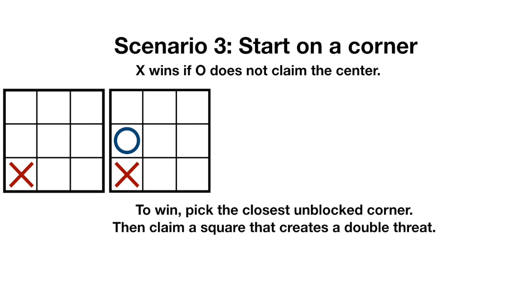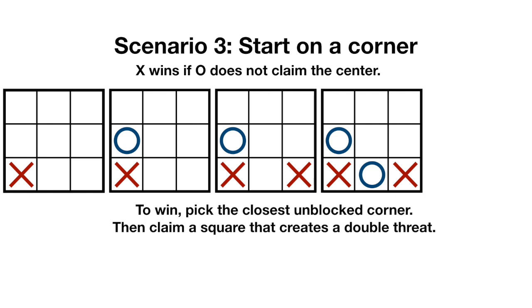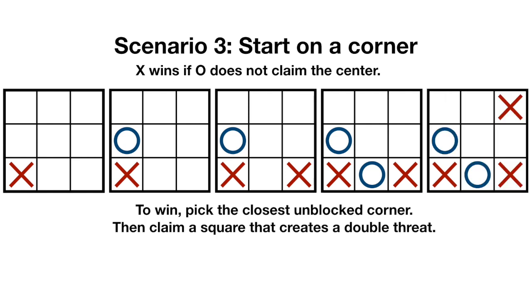The winning strategy is the same no matter which non-center square O chooses. Create an immediate threat by claiming the closest unblocked corner, then after O parries the threat, create a double threat that can't be stopped.